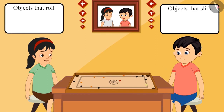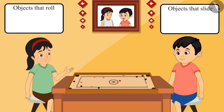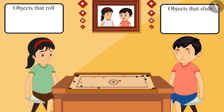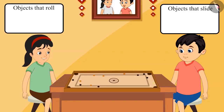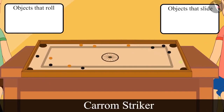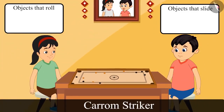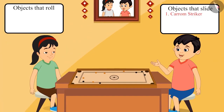Chotu says yes, they'll make the list after playing, but wonders how they will know which object slides and which rolls. While thinking, Chotu tosses the queen into the pit and Pinky notices that the carrom pieces are sliding into the pit — giving them one example right away! They decide to push more objects to find out.